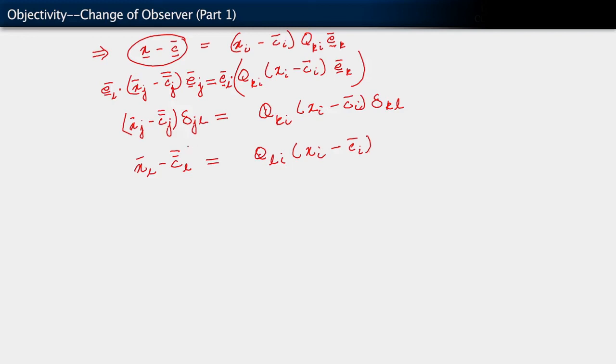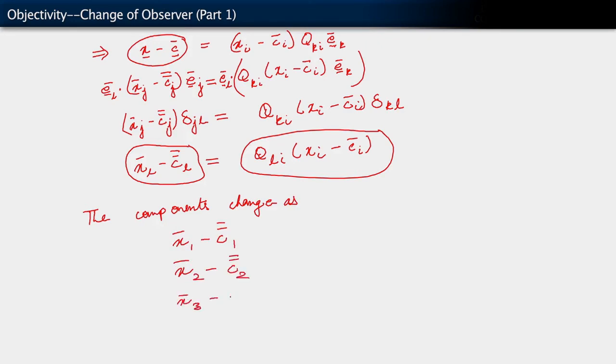All right? But by comparison now, we know that xj bar minus c double bar j equals qji times xi minus c bar i. So that is what we have, as the relation between the components of our vector in the new basis, in the barred basis, relative to its components in the unbarred basis. So, if we think of the components.